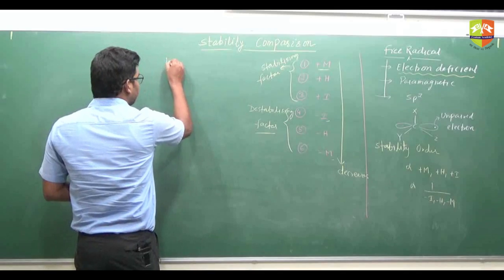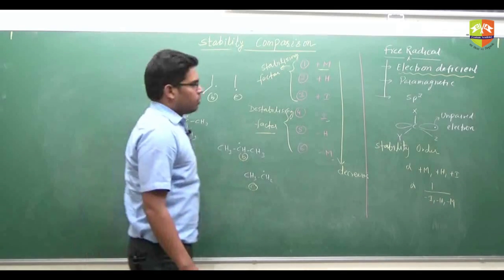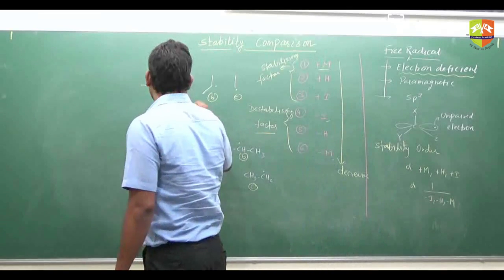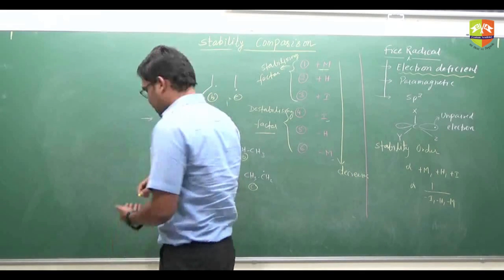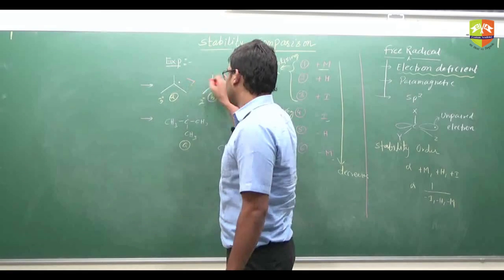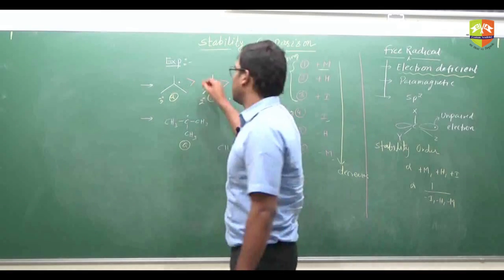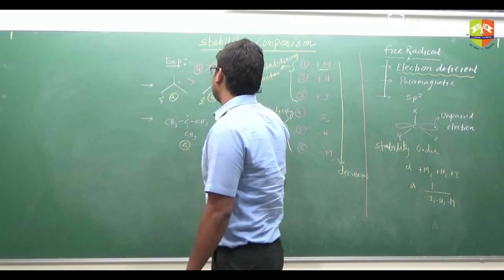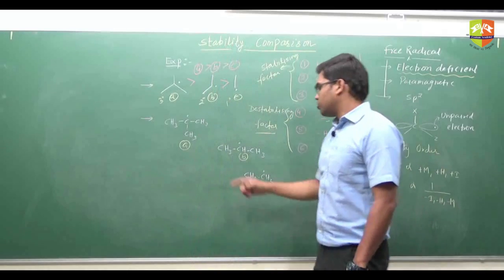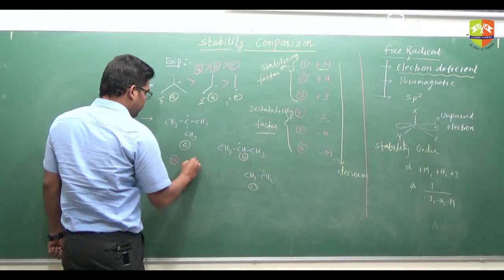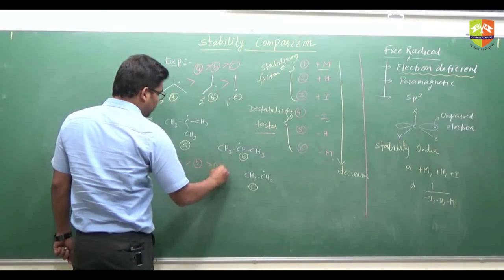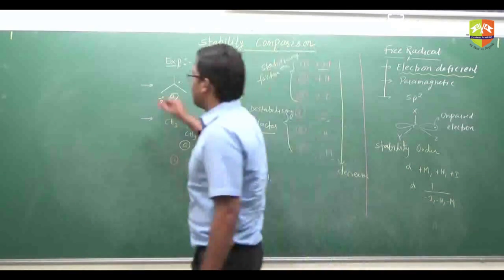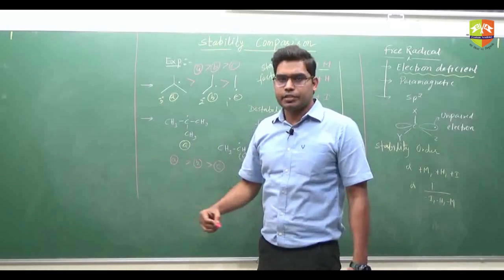For example, if you compare the stability of three free radicals — a tertiary (3°), secondary (2°), and primary (1°) — the stability order is maximum for A (3°), then B (2°), then C (1°). Similarly, for another set A, B, and C where A is tertiary, A will be maximum, then B, then C. This is how we compare degree-based stability order of free radicals.